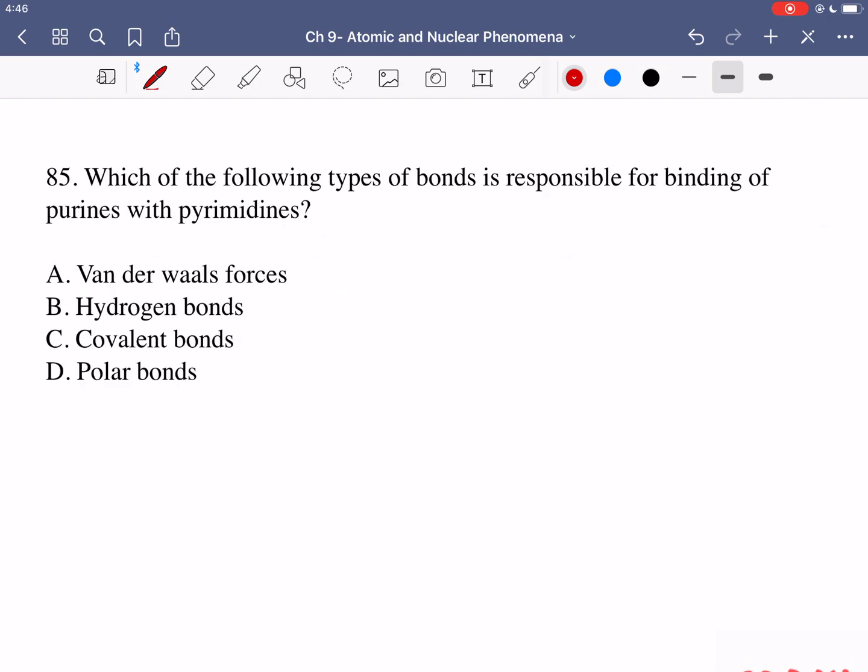In question 85 we're asked which of the following types of bonds is responsible for binding of purines with pyrimidines. So purines and pyrimidines and we're asked for the type of bond. Well when we're talking about nucleotides bonding with each other between different strands, so how do complementary strands in DNA bond with each other? It's through hydrogen bonds. So B is the correct answer.